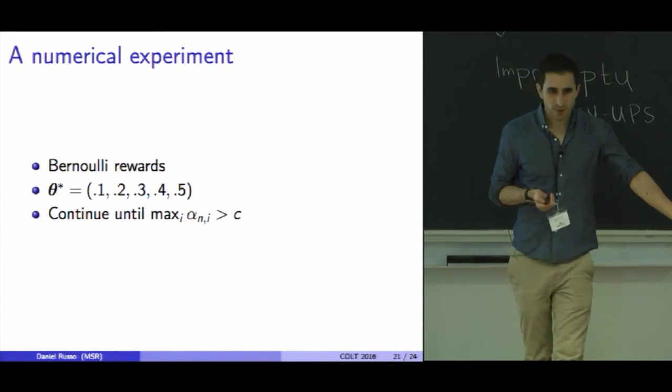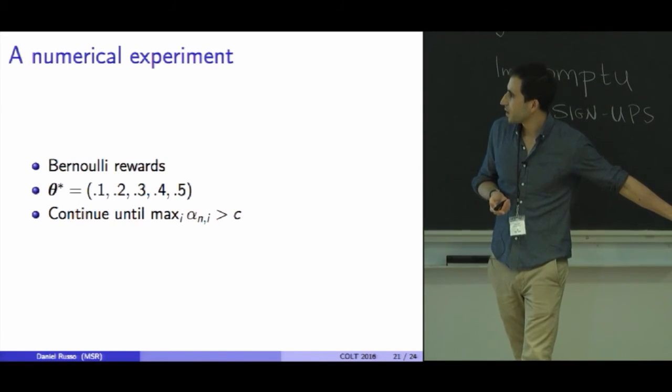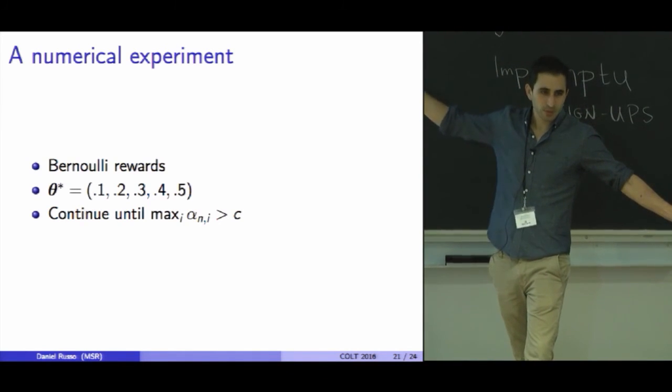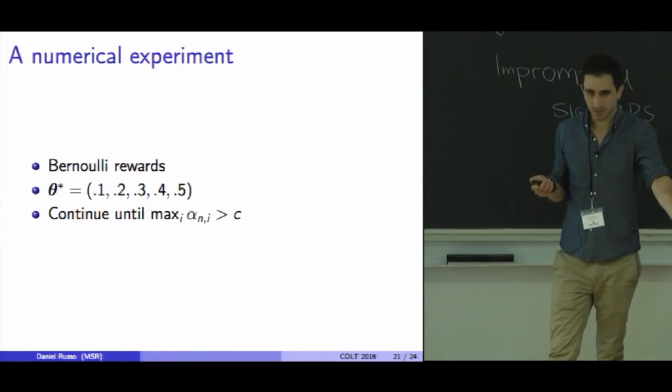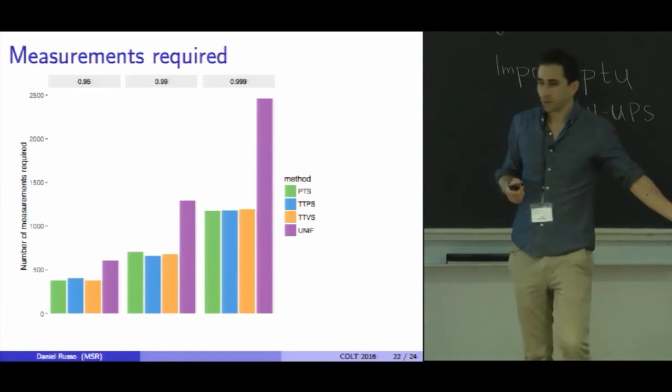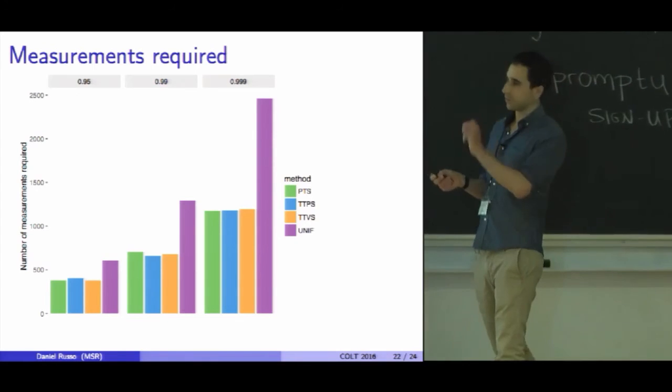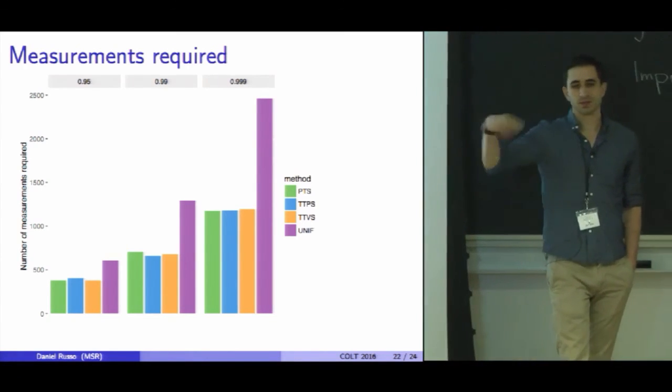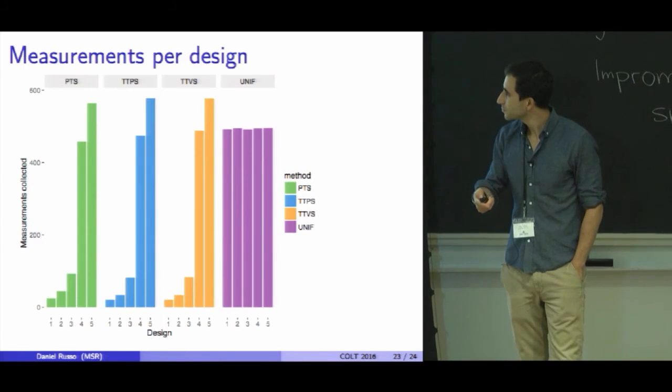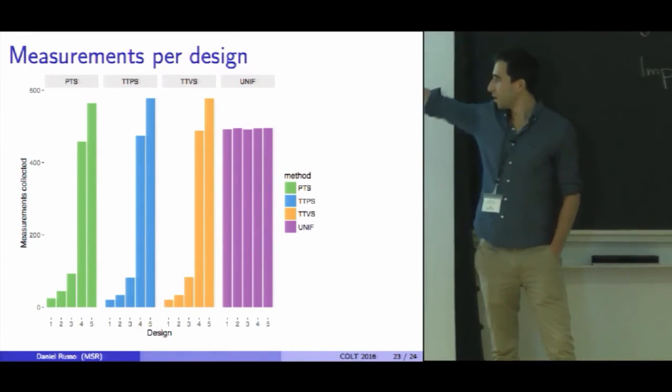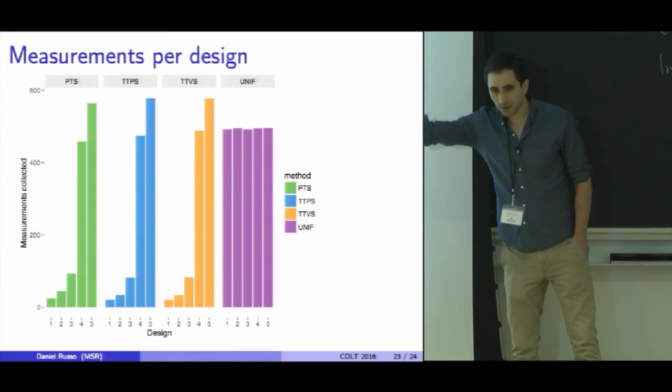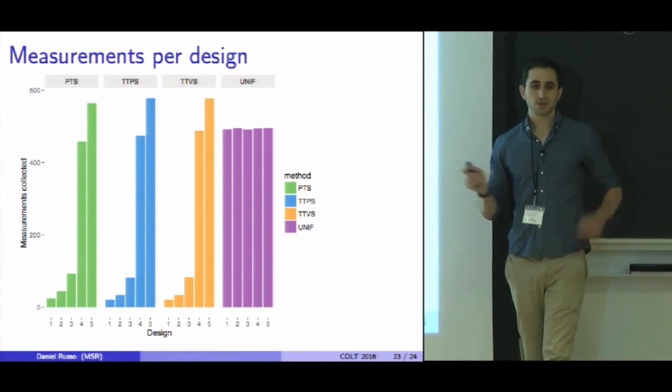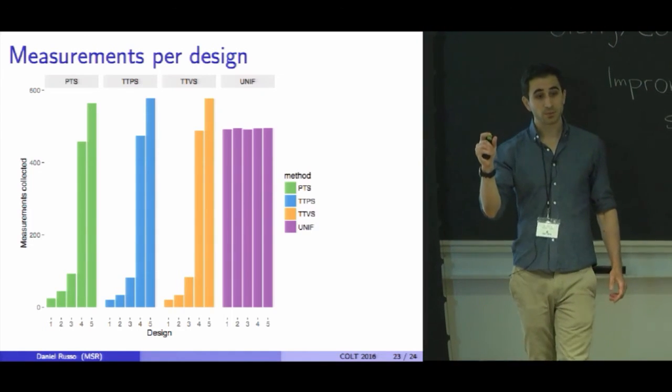I can show you a simulation experiment in which some of this really pops out. Let's look at a trial where there are Bernoulli rewards, and the success probabilities are encoded by this vector: 0.1, 0.2, up to 0.5. So the best design is design 5. If you continue until the posterior concentrates to different levels, you can see that all the proposed algorithms are stopping in something like half the time that a uniform allocation requires, even in this simple example. And then you can see what they're doing differently. All of the three proposals allocate much less measurement to the first design, then the second, then the third, and so on. Most of the measurement effort is spent on things that are very nearly optimal and are hard to distinguish from the best.